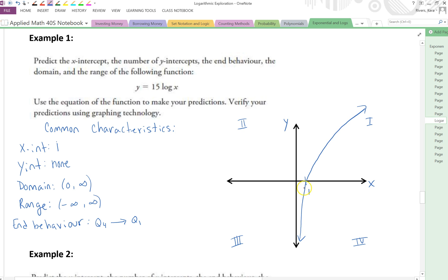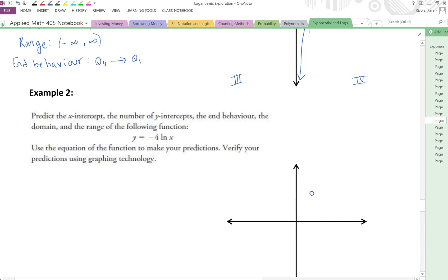We've got a y-intercept, well, there are none, and an x-intercept of 1. Let's take a look at example 2. In example 2, we've got a natural log.